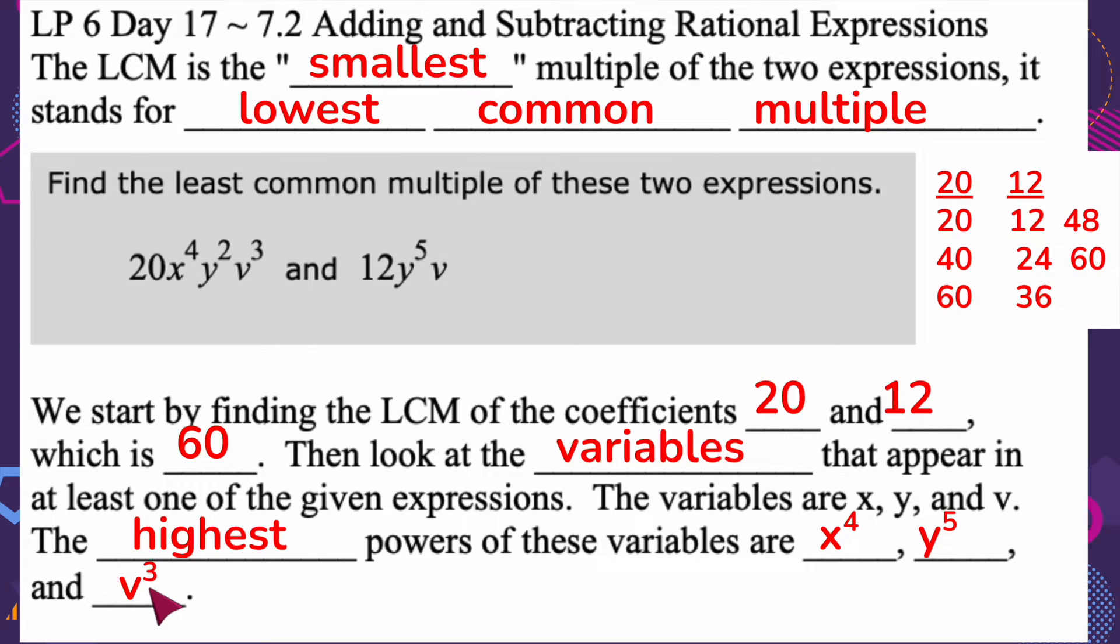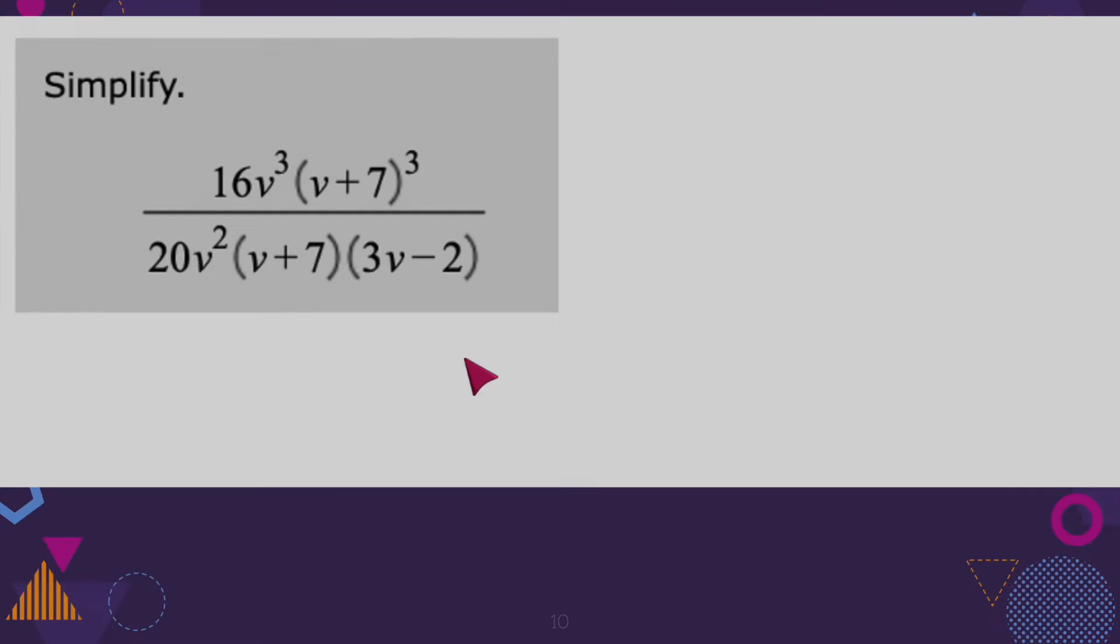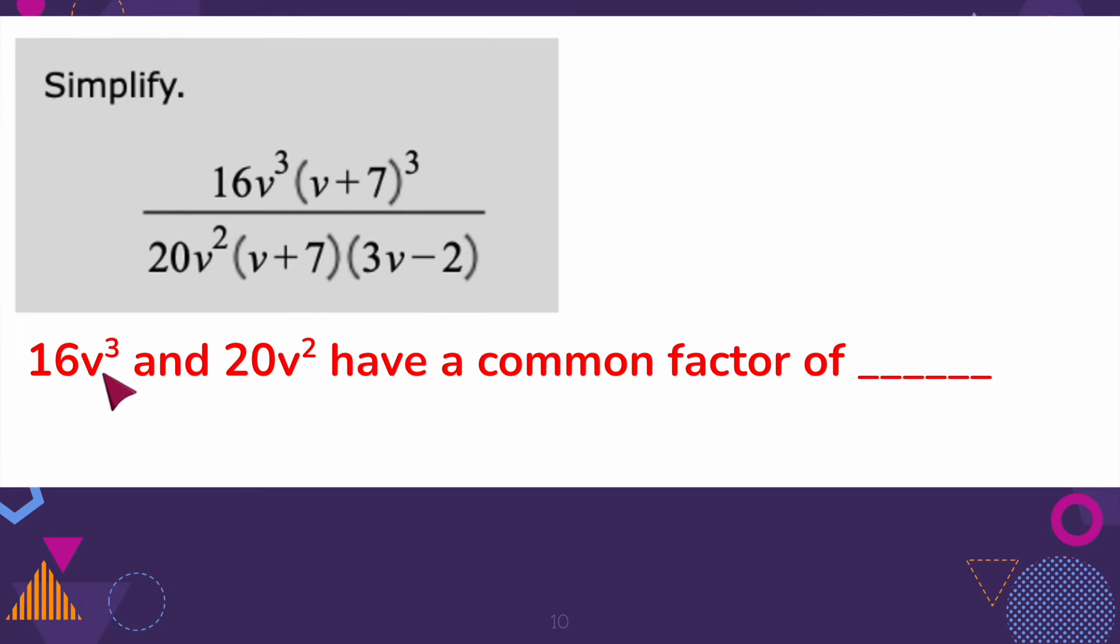So my lowest common multiple of these two is going to be 60, that's the coefficients, and then my variables, the highest of each variable that I have. All right, so let's try this one more time, and we're going to simplify here. So we have 16V cubed and 20V squared, and they have a common factor, so we're going back to factoring here.